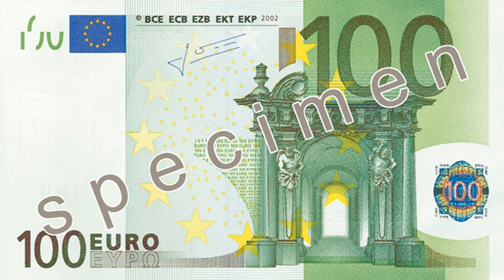As a result of the rapid internationalization of the renminbi, as of 2013 it was the world's eighth most widely traded currency. At the end of November 2015, the Chinese renminbi was designated as one of the world's global currencies, and became one of the currencies in the currency basket known as special drawing rights.